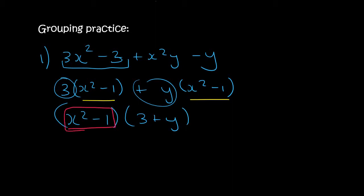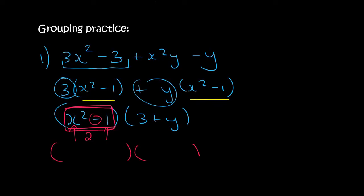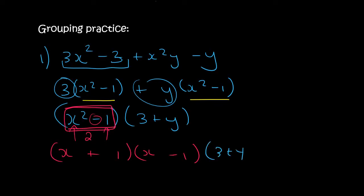Remember from a previous lesson we did something called difference of squares, where you have two terms separated with a minus and each one is a perfect square — because x times x gives you x squared and 1 times 1 gives you 1. So we open up two brackets: x plus 1 and x minus 1, and then the 3 plus y stays there.